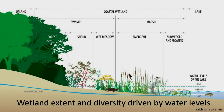This graphic from Michigan Sea Grant shows the different zones of vegetation and structure in Great Lakes coastal wetlands: from the forest to the shrubs, to the wet meadow, the emergent zone, and the submergent zone. What I want you to notice is that the highs and lows of any Great Lake correspond to the different zones of wetland vegetation and their actual extent. So the degree of water level fluctuation directly corresponds to the amount of wetland area on a Great Lake.